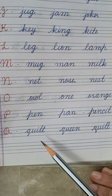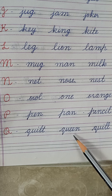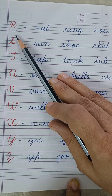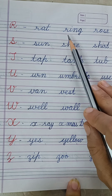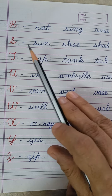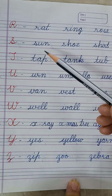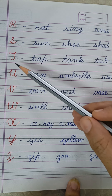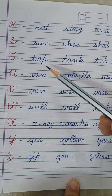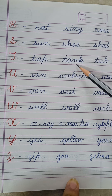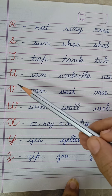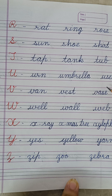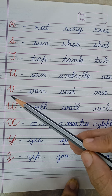From Q we will make quilt, queen, and quill. From R we will make rat, ring, and rose. From S we will make sun, shoe, and shirt. From T we will make tap, tank, and tub. From U, umbrella.